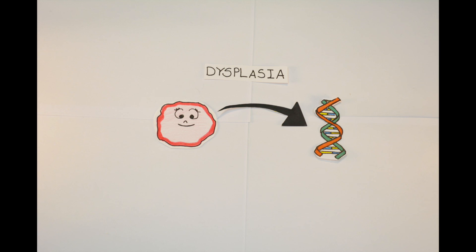The last type of adaptation is dysplasia. It is similar to metaplasia, but the difference is that the replacement happens with immature cells with nuclear or cytoplasmic abnormalities. It is reversible in mild cases, while severe forms of dysplasia have a great chance to develop into neoplasia.